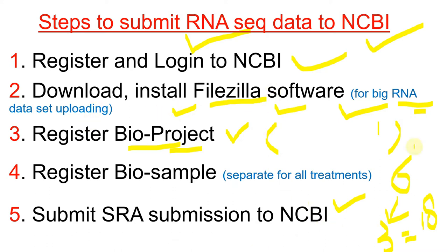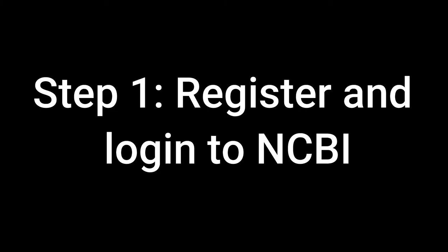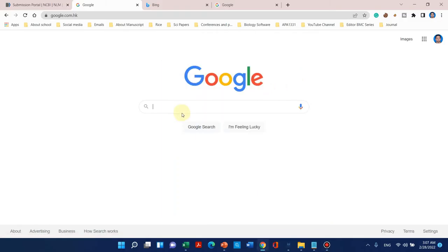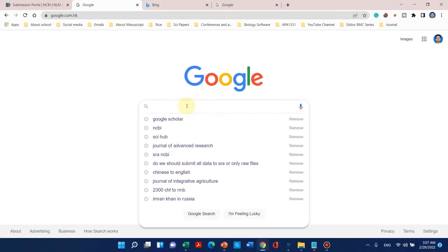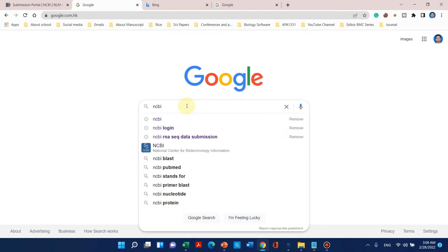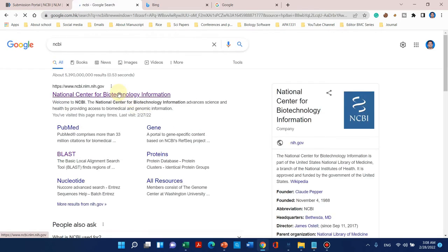The last step is the submission of SRA data into NCBI. This is the flow by which we can submit RNA-seq data to NCBI. Now let me take you to the computer screen where we can upload our NCBI sequence data. Let's open the NCBI website.